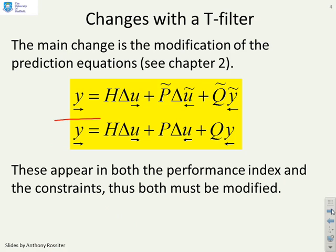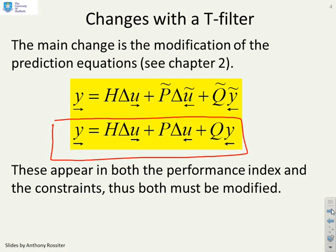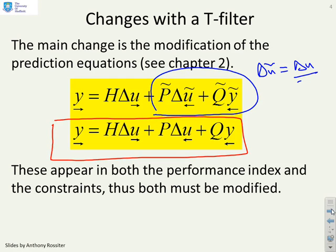GPC had predictions of a certain form. When you have a T-filter, you'll notice the part that depends on the past undergoes a subtle change. You get a P-tilde matrix instead of P, which multiplies a delta-U-tilde past rather than delta-U. Delta-U-tilde was essentially defined as delta-U over T, so it's a filtered variable. You also get the same substitution with Y: Q becomes Q-tilde, Y-past becomes Y-tilde-past. So we want to ask how this changes the QP we need to solve.